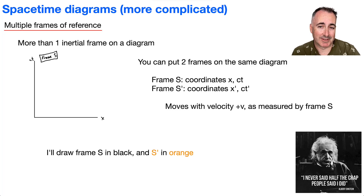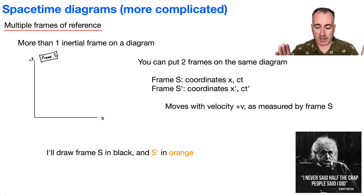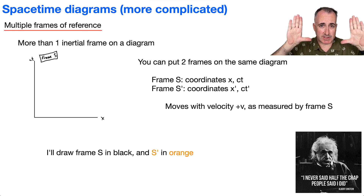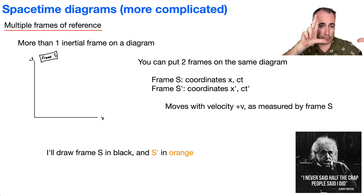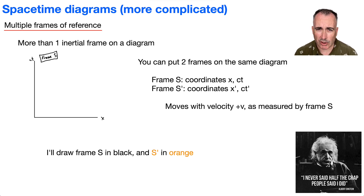Let's do more complicated space-time diagrams. We're going to be considering what happens if you have a frame of reference that's stationary, and at the same time you have a frame of reference that is moving. We're going to be overlaying these two frames of reference. In textbooks or on exams it just looks like a big mess, so I want to show you how this works by generating these on the fly, and I'm also going to color code them.